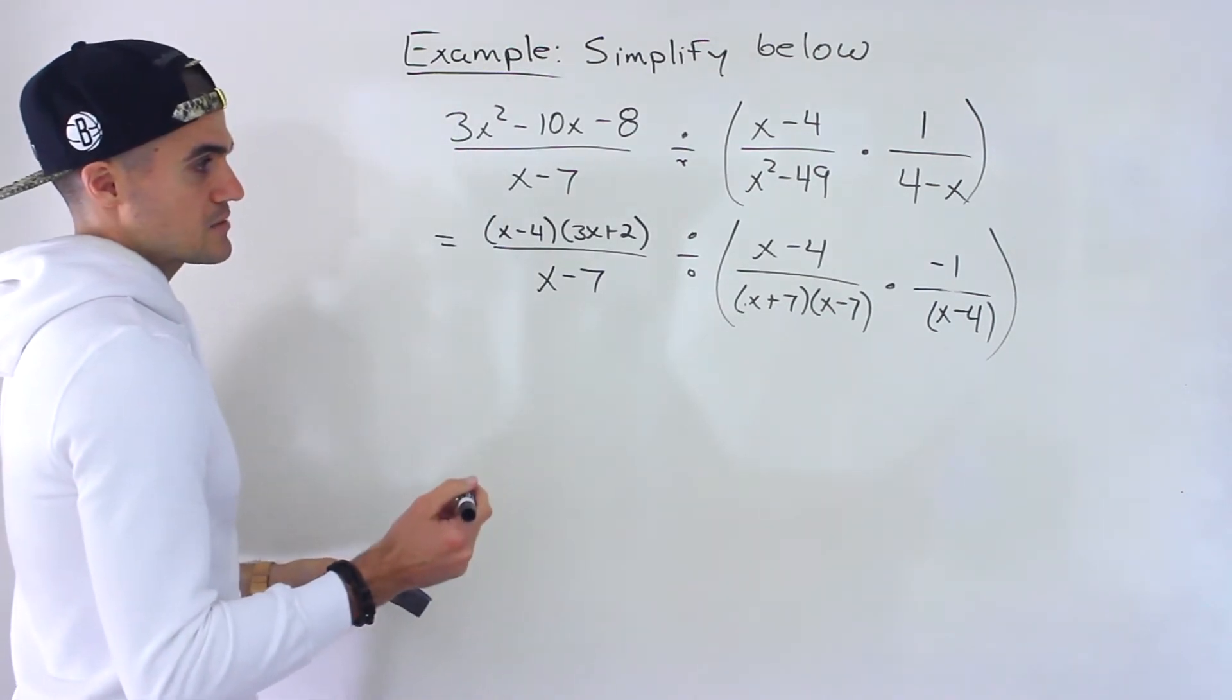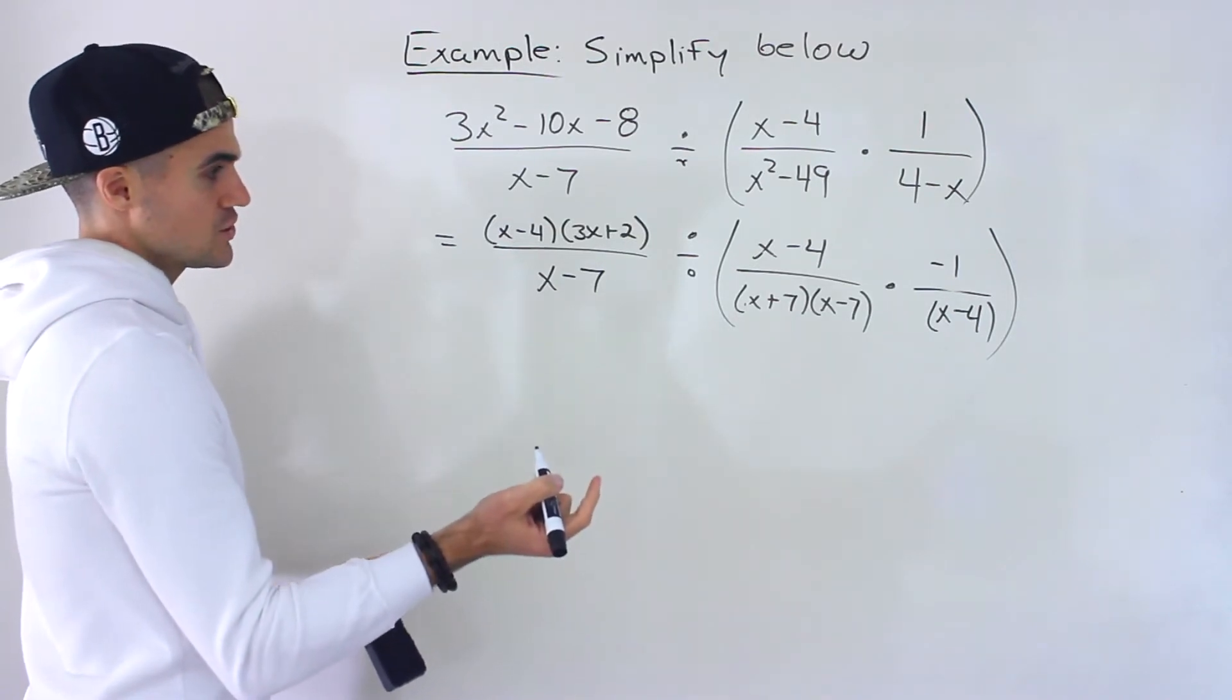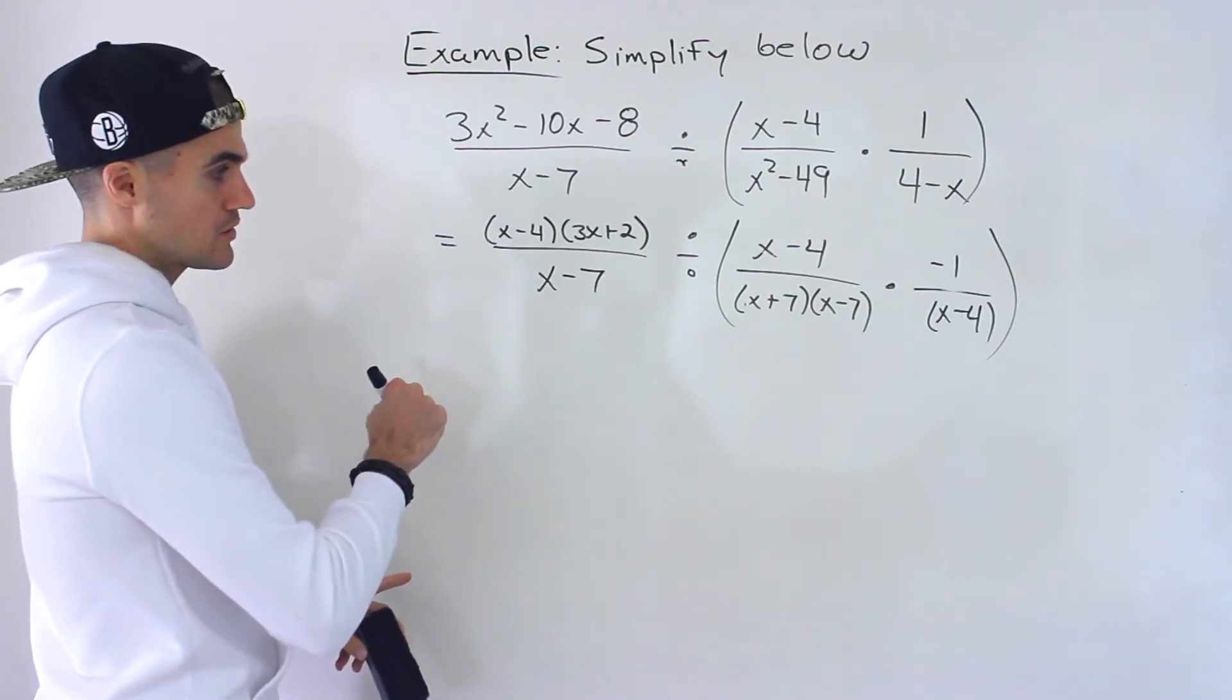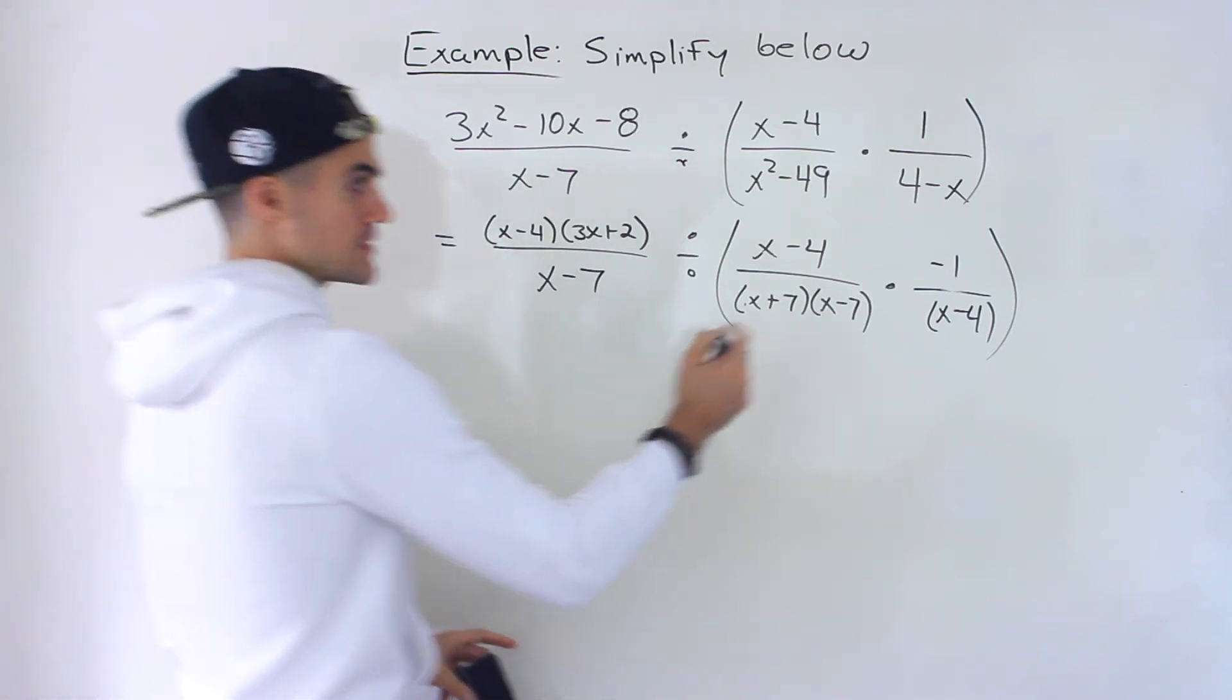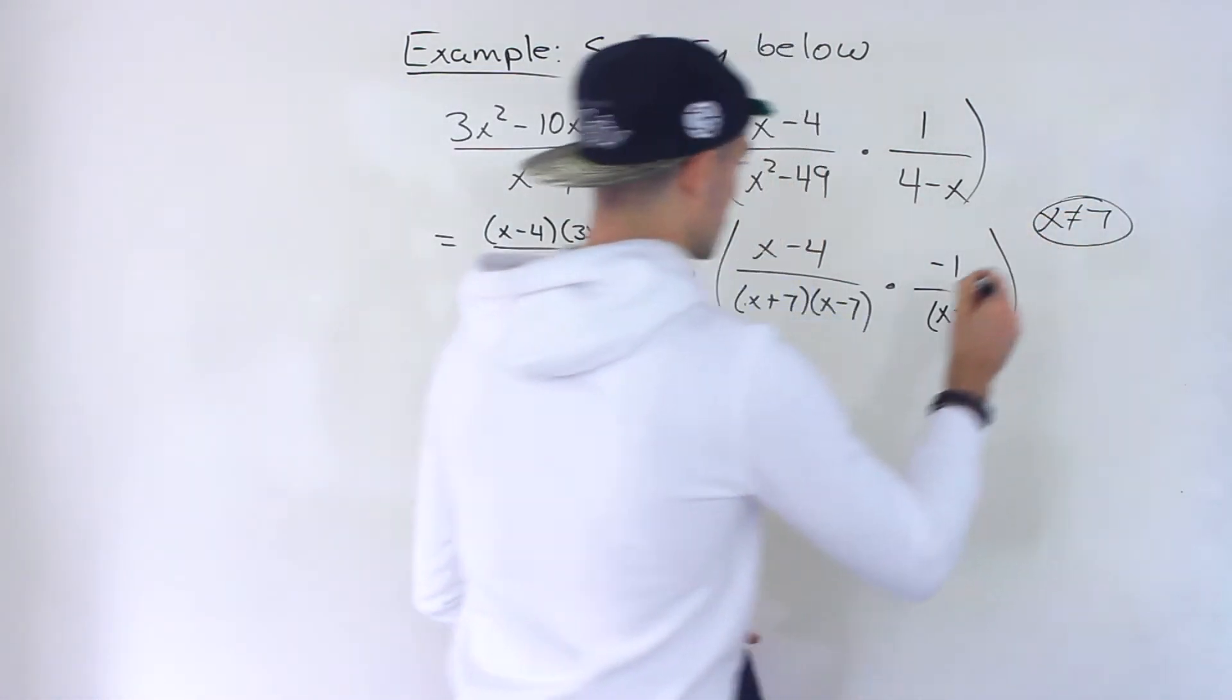And so from here you just simplify. Now if they ask for restrictions you can get the restrictions from here. So notice here the denominator can't be 0 so x cannot equal 7. That's one of the restrictions.